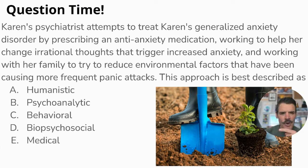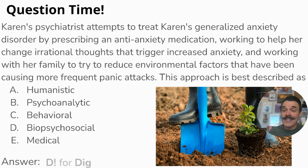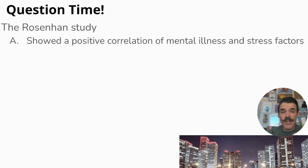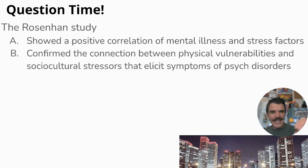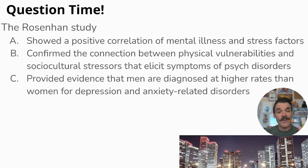The answer is D — biopsychosocial, because it combines medication (biological), changing thought processes (psychological), and addressing family/environment (social). Next question: Rosenhan's study — did it show positive correlation of mental illness and stress, confirm biopsychosocial connections, show men diagnosed at higher rates than women for depression and anxiety, provide insights into causes of schizophrenia, or illustrate the negative influence psychological labels can have on the perception and treatment of people with mental disorders?